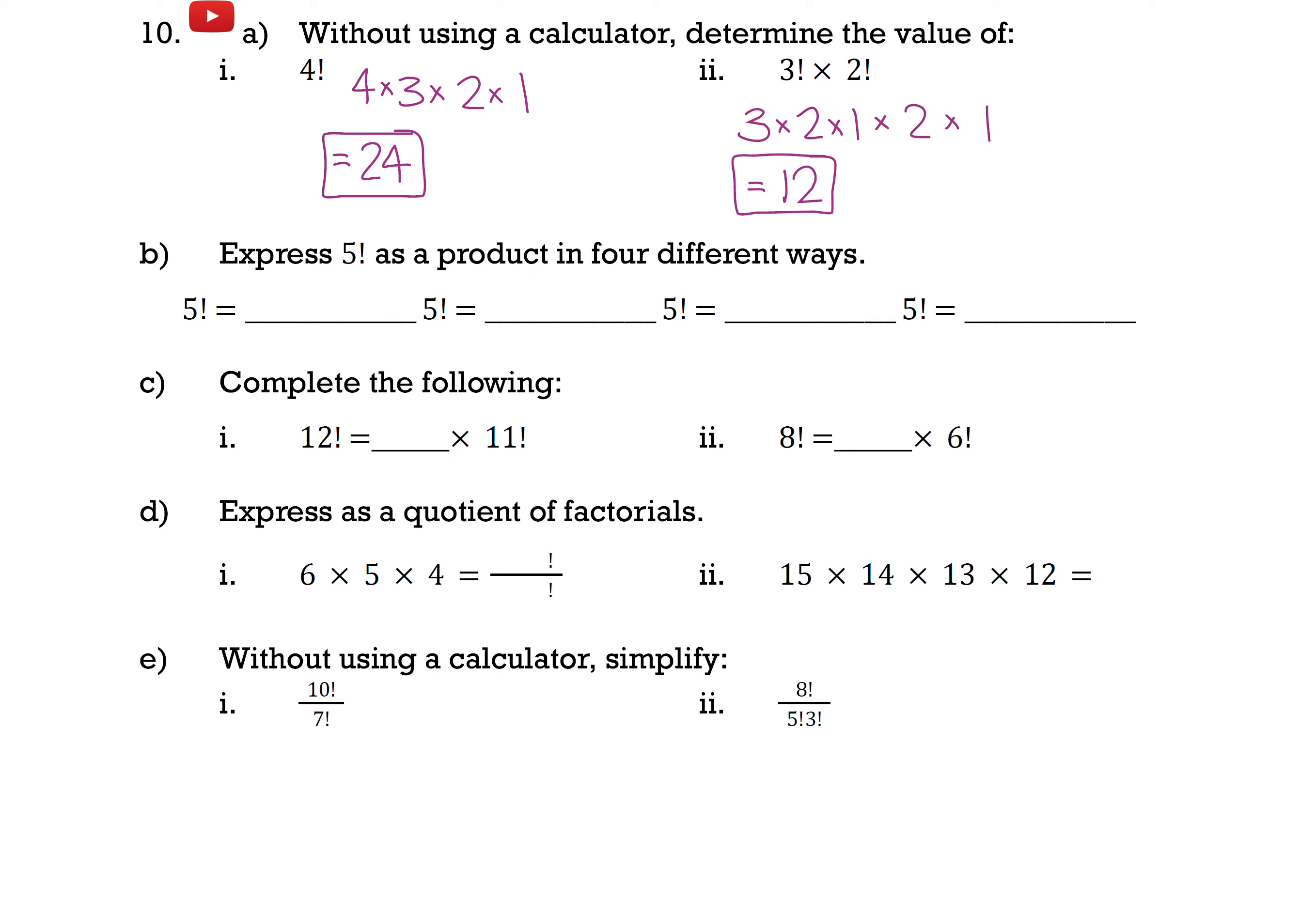In part b, it's asking us to express 5 factorial as a product in 4 different ways. Remember that a factorial we could represent it as the multiplication of all positive integers less than itself. So I could write this as 5 times 4 times 3 times 2 times 1.